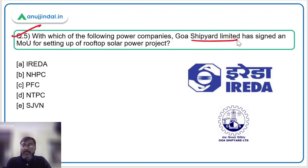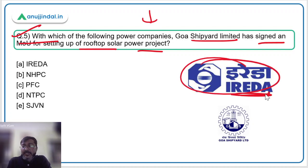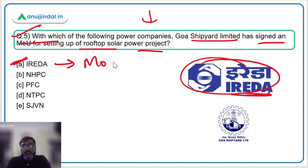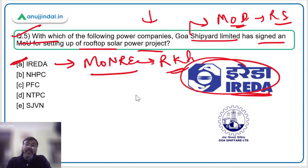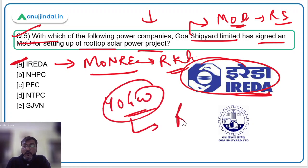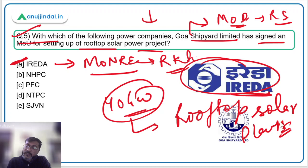Question number five: with which power company has Goa Shipyard Limited signed an MOU for setting up rooftop solar power projects? This MOU has been signed with IREDA — the Indian Renewable Energy Development Agency — so option A is the correct answer. IREDA is a PSU under the Ministry of New and Renewable Energy, while Goa Shipyard Limited is a PSU under the Ministry of Defence headed by Mr. Rajnath Singh. The Government of India has set a target of 40 gigawatt of solar energy through rooftop solar plants by the end of 2022.